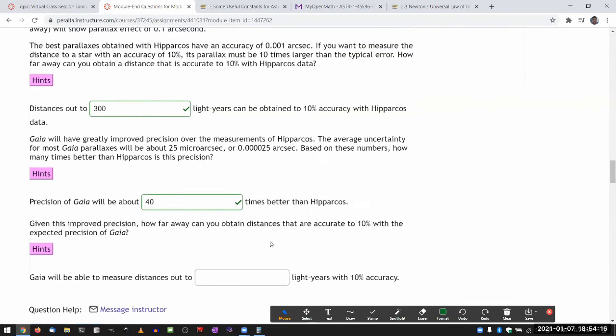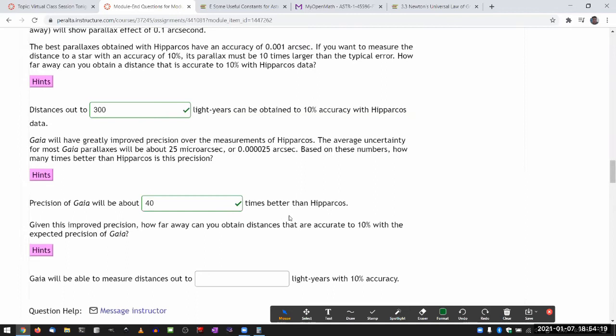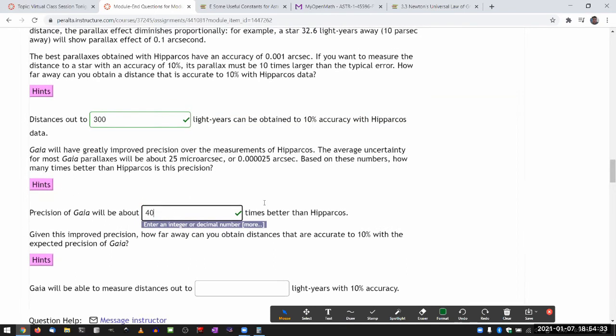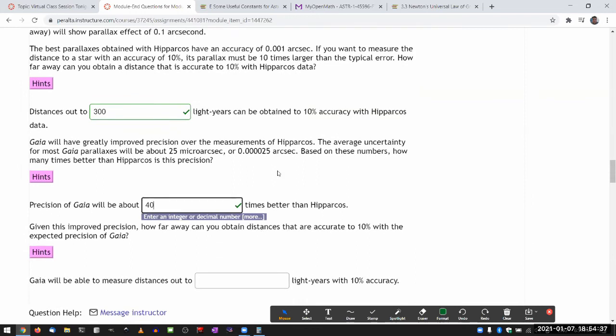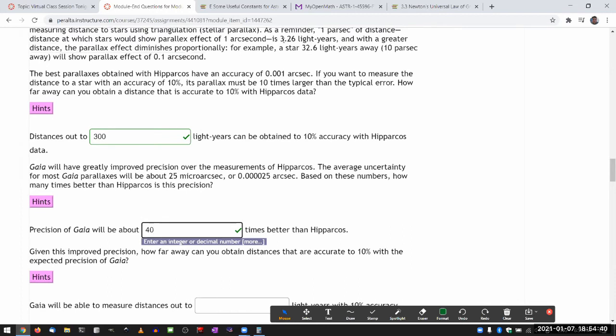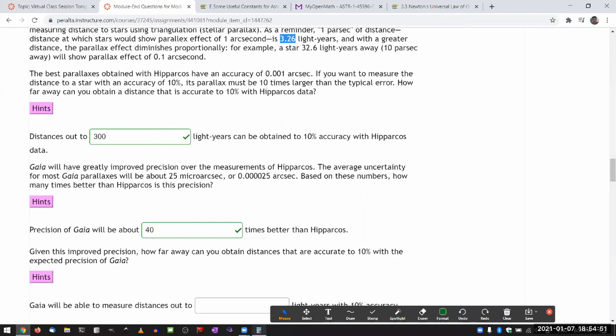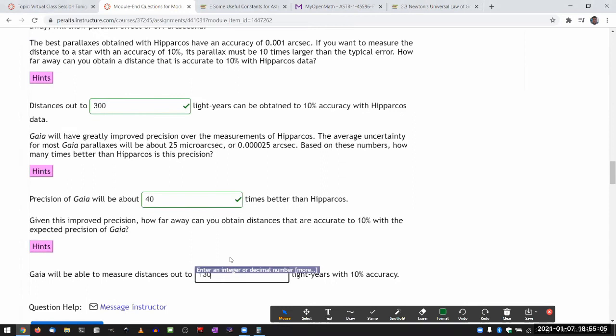So given this improved precision, how far away can you obtain distances that are accurate to 10% with the expected precision of Gaia? There's a couple different ways you can get the number here. I think you can do your first answer times 40. That's one. Another way you can do that is to do the same calculation we did up there, which is to take the distance that's associated with one arc second and divide it by the expected parallax size for the new distance. So 3.26 divided by 0.000025. So 130,000 light years.